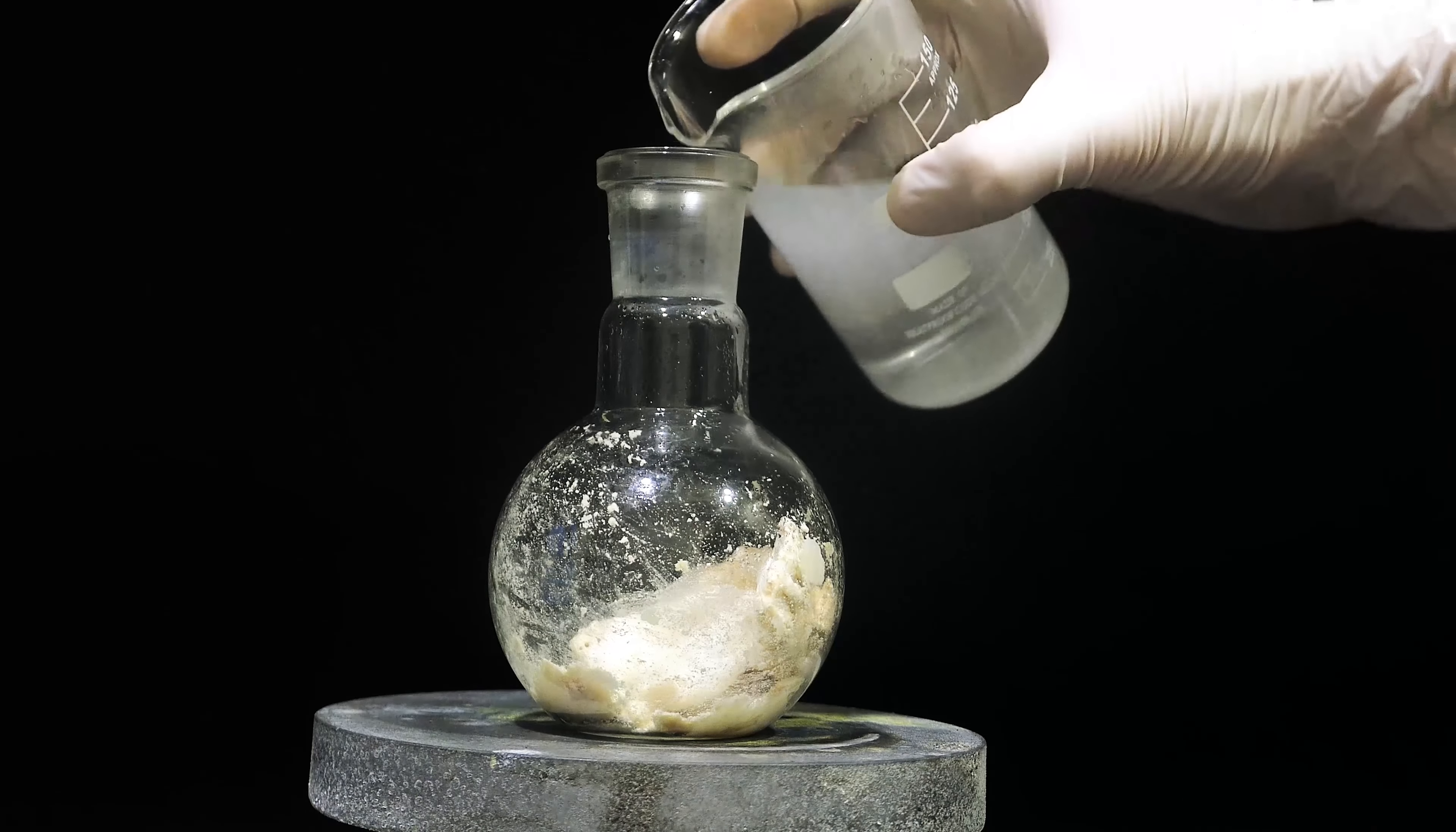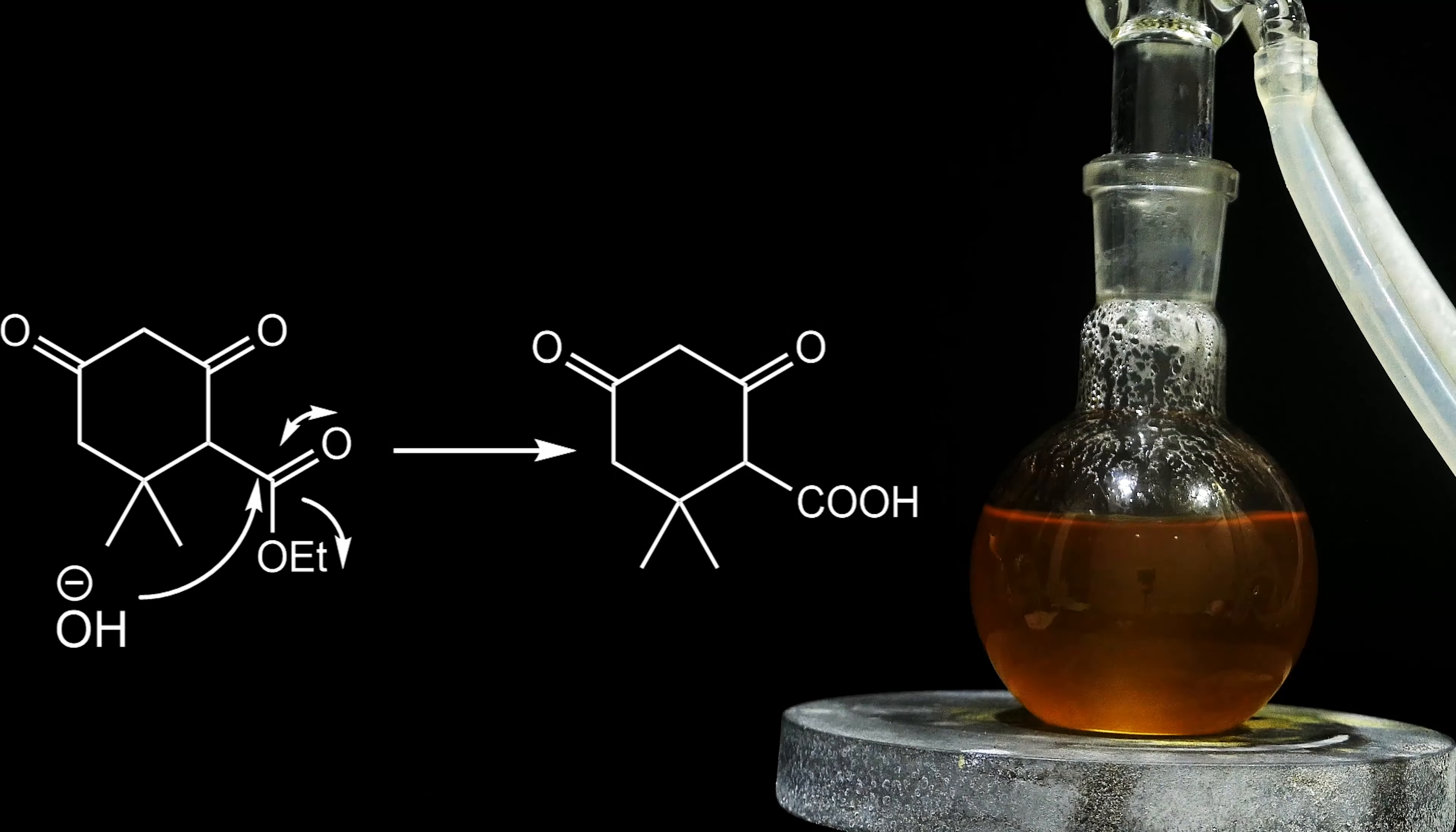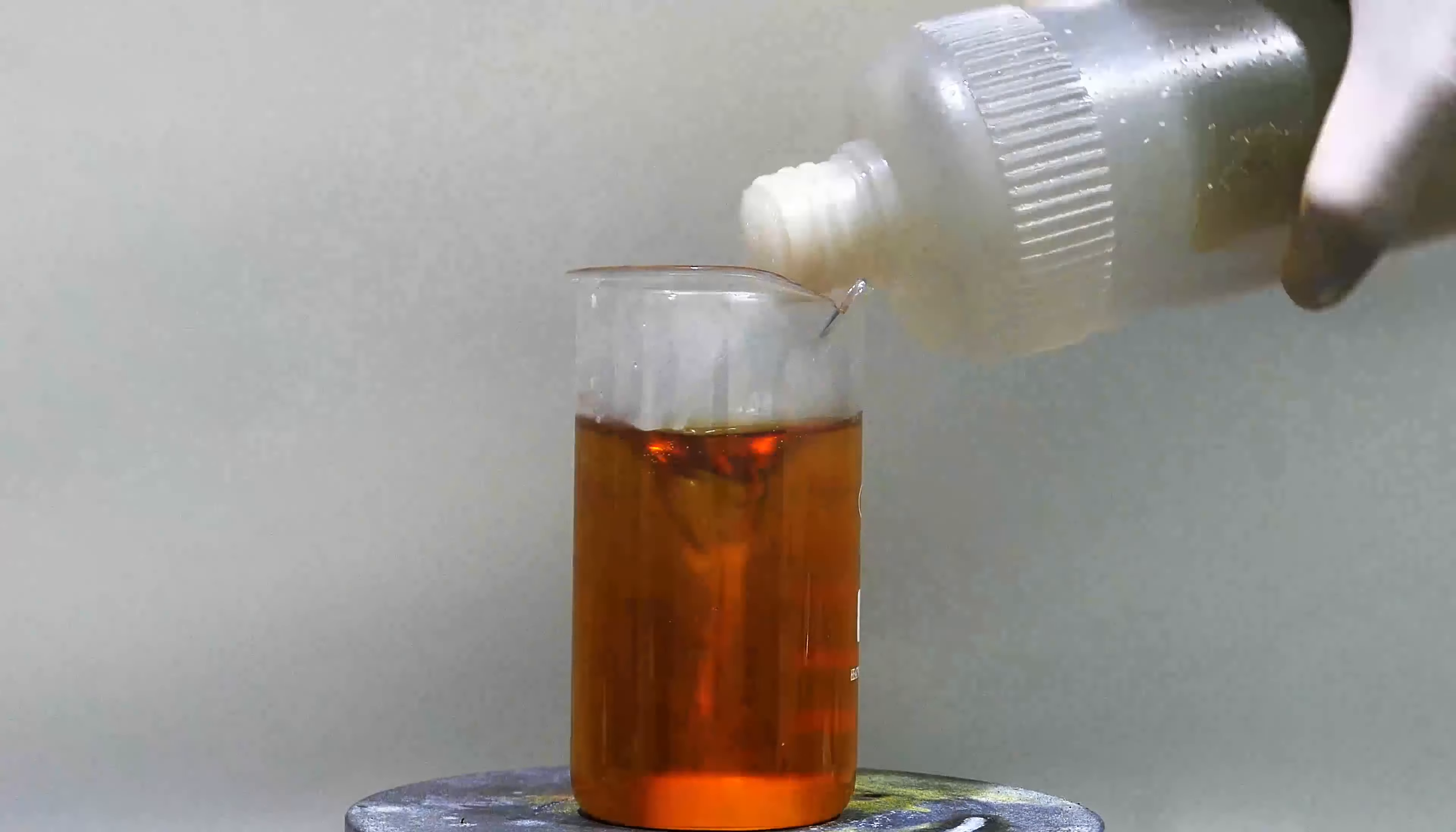I instantly dissolve this yellow cake by pouring in 100 milliliters of 3 molar sodium hydroxide solution. Next, reflux the solution for 2 hours to hydrolyze all the intermediate ester. This step is followed by acidification, simply adding concentrated hydrochloric acid until pH reaches 1.